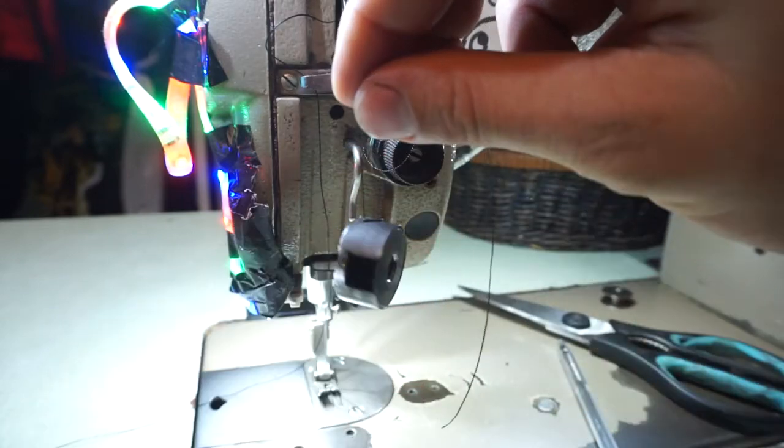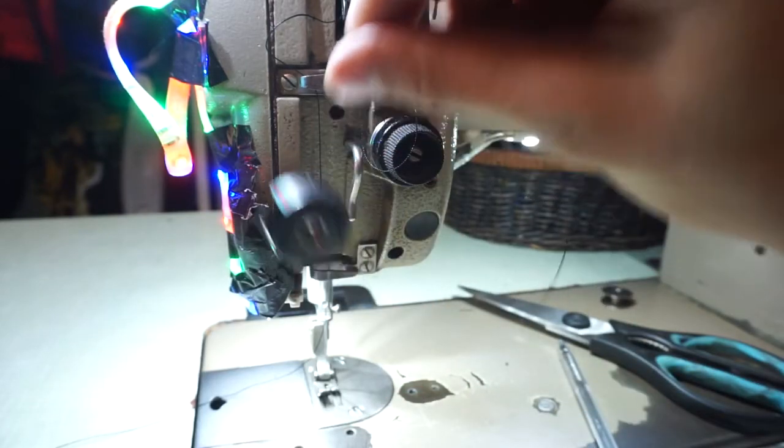Lower thread tension should be high enough when you hold your bobbin case like so, it doesn't go down.